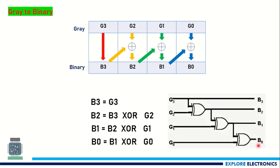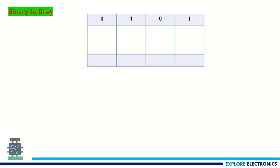If you want to write the Verilog code for gray to binary and binary to gray conversion, you can use the same logical expressions and implement it using a Verilog code. Now let us take an example to convert binary to gray.